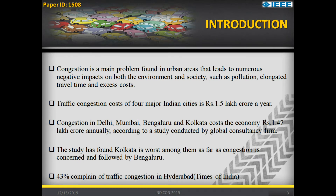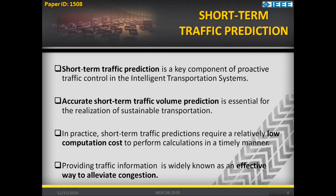This traffic condition is a very significant scenario being faced in urban as well as the central CBD area. According to statistics, nearly 1.5 lakh crores are being wasted due to time loss in congestion. In brief, short-term traffic prediction is about predicting the futuristic traffic coming on the road on a short-term basis — data is collected in the short term and then forecasting is done for the future.